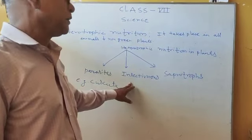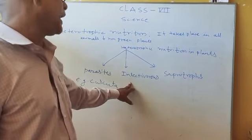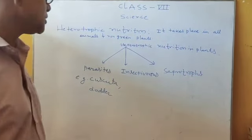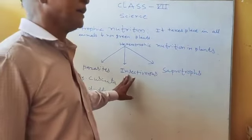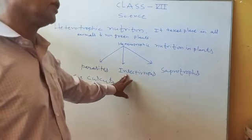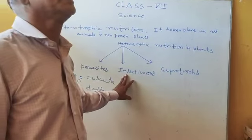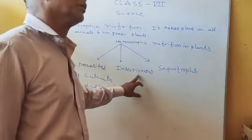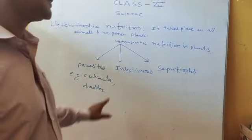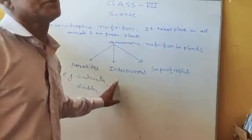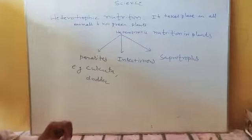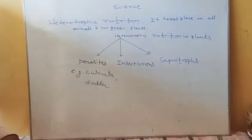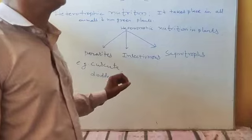This plant acts as a heterotroph. It is a non-green plant, and the example is pitcher plant — this is called insectivorous. We say insectivorous because it eats insects.